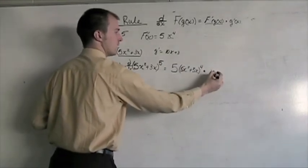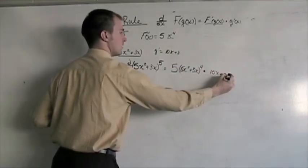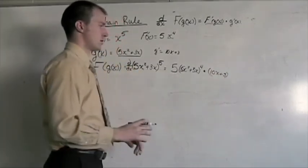And g prime is equal to 10x plus 3. So, that's all we need to multiply it by. 10x plus 3.